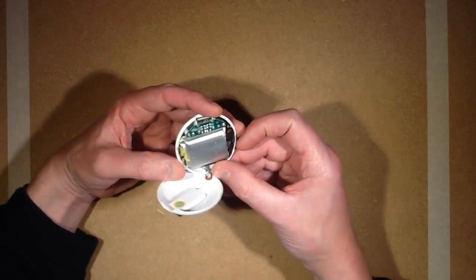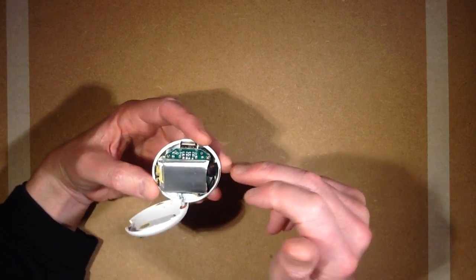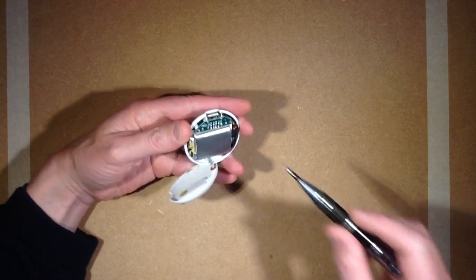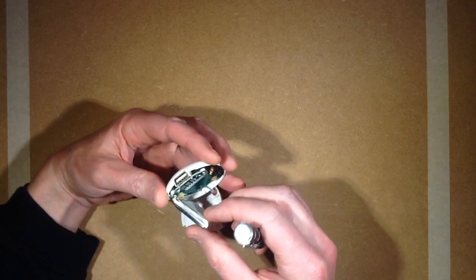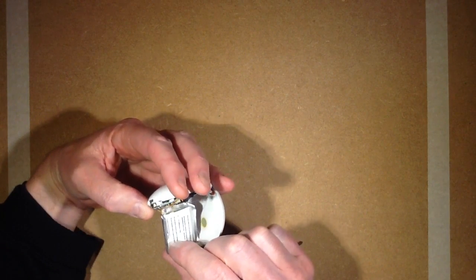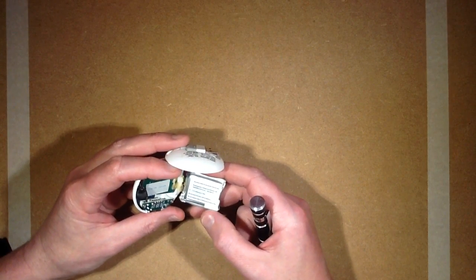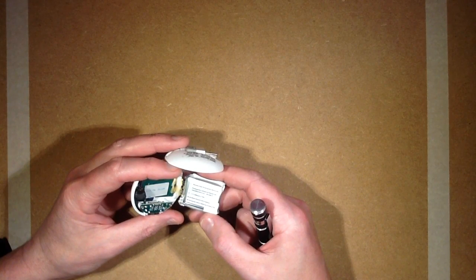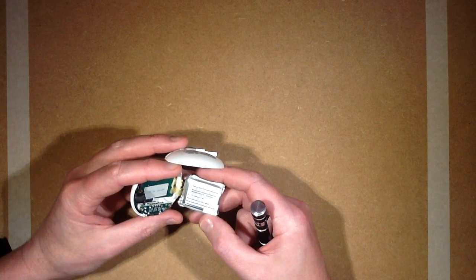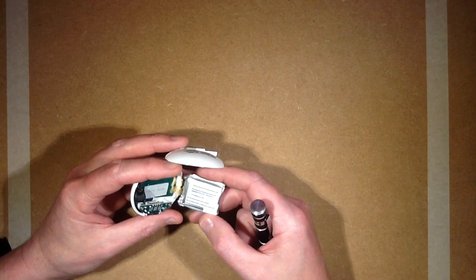So here we have the inside - the lithium cell, there's a circuit board for the connector. I don't know what else is on that, let's take a look shall we. Here's the lithium battery. The lithium battery says 1,000 mAh. There you go, that's quite accurate then.